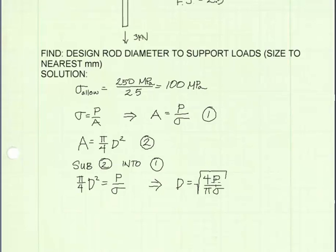Now I'm going to let P equal the internal load in the rod, which is 3 kilonewtons, and sigma I'm going to let equal our sigma allowable. And then I will solve for the diameter of the rod.